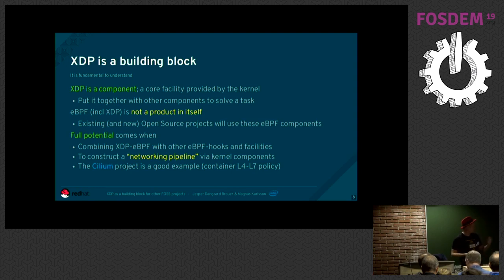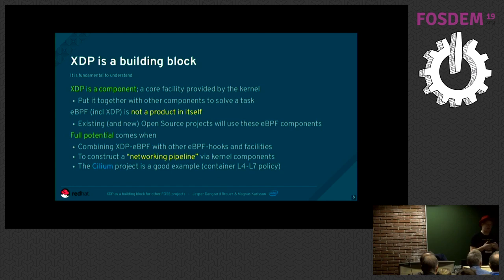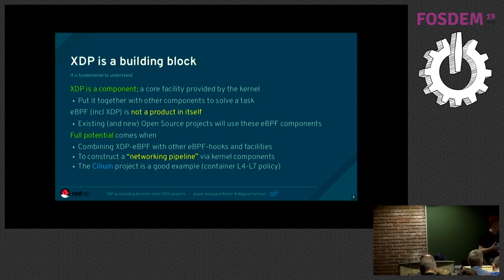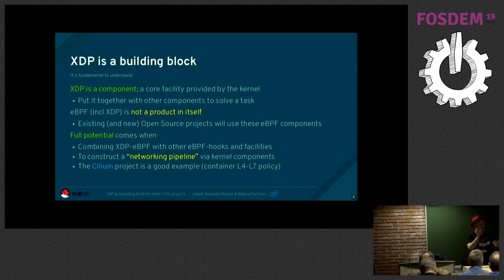XDP is not a product in itself — I really want existing open source solutions to use it, and there will be some new ones too. XDP is a hot topic because we can do millions of packets per second, but the real potential comes when combining it with the other BPF hooks that exist in the kernel, constructing network pipelines using these different BPF hooks. That's what the project called Cilium is doing — primarily for containers, combining all these different components.